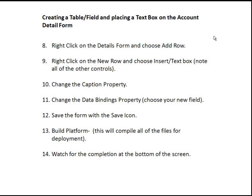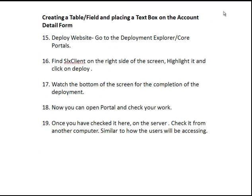Then we'll go ahead and click Save on the form with the save icon. After that, we want to make sure at number 13 that we build the platform. This compiles all the files and readies them for deployment. We'll watch the bottom of the screen to make sure that the build platform completes. Then at number 15, we want to go ahead and deploy our website. We'll go to the Deployment Explorer, Core Portals, find the SLX Client on the right side of the screen, highlight it, and click Deploy — again watching the bottom of the screen to make sure the deployment succeeds.